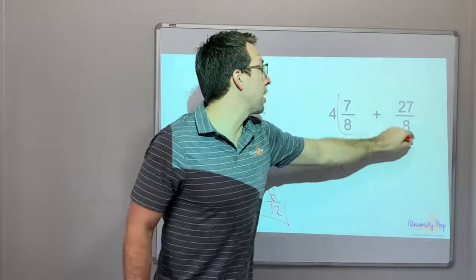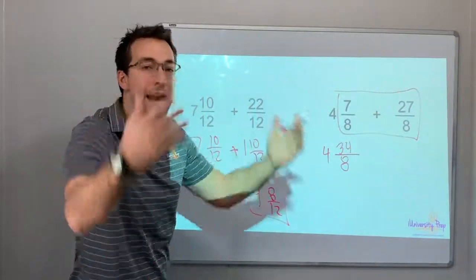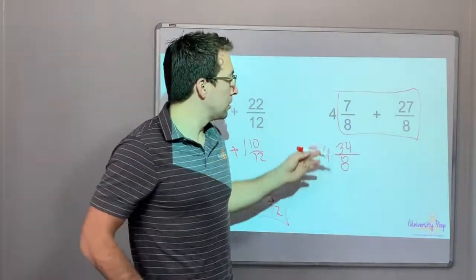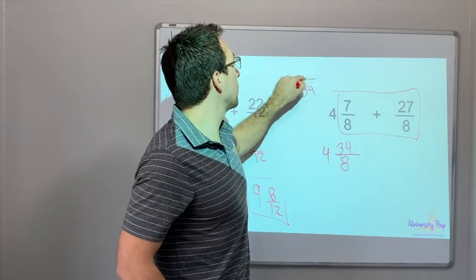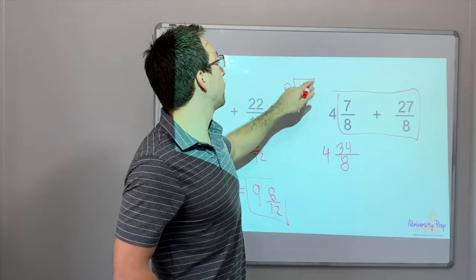So we just added the improper fractions together, and now we can convert them to a mixed number. So 8 times 4... 34 divided by 8, 8 times 4 is 32.